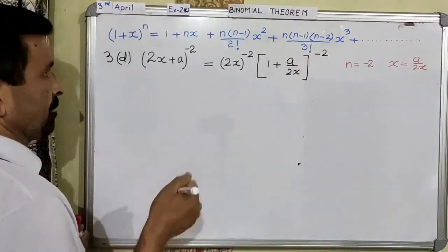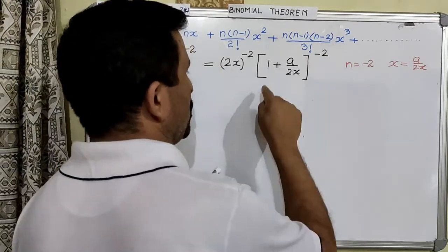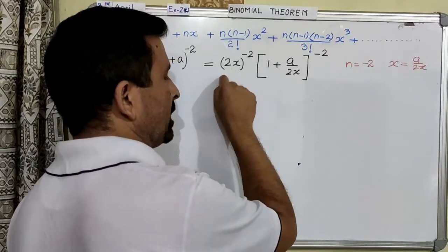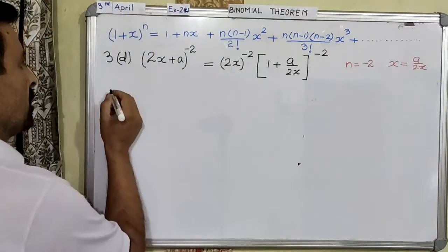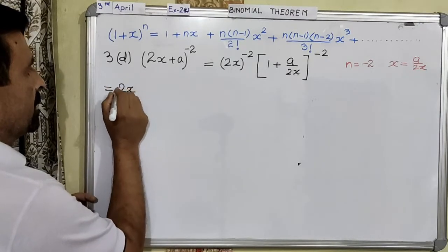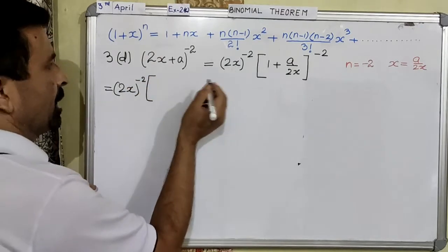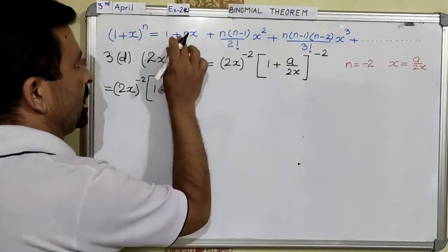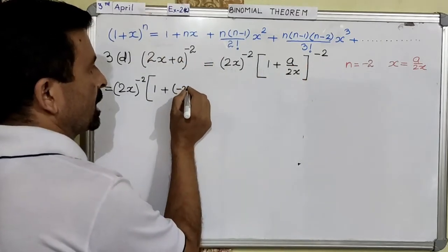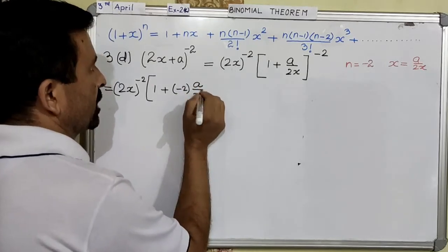Now let us start the question. When you are writing the binomial expansion, you will expand only the binomial — we will not do anything with the 2x to the power negative 2 outside; this will remain as it is from beginning till the end. So this is 2x to the power negative 2. Now remaining: first term is 1, plus nx — n is negative 2, x is a over 2x. Your nx is done.